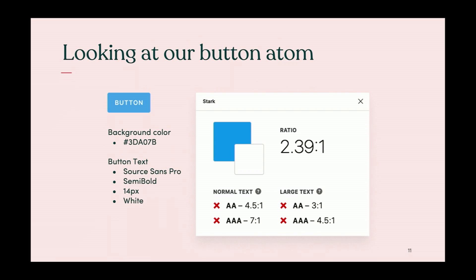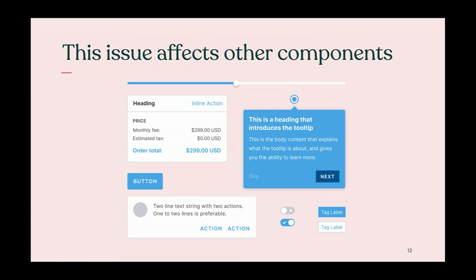Our button has too low contrast — a light blue background and white text on top, 14-pixel semi-bold font. That ratio is 2.39 to 1, but it should be 4.5 to 1. The real issue is that we're using this pattern across our system. Finding it at the product level means product designers can't fix it, and we can't address it across the system.